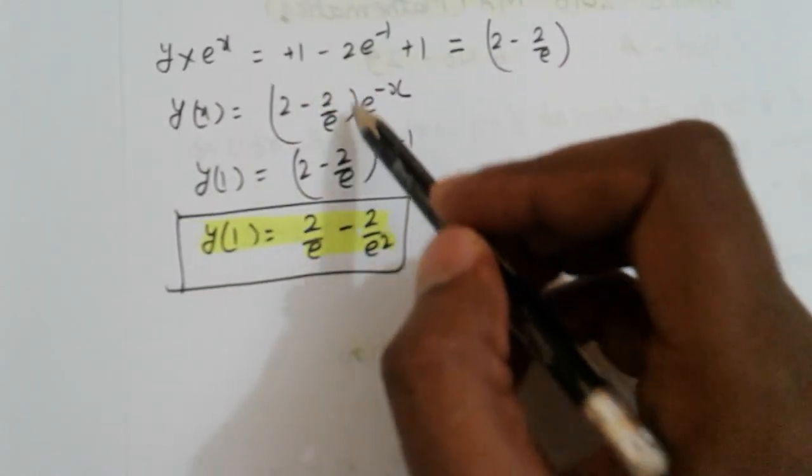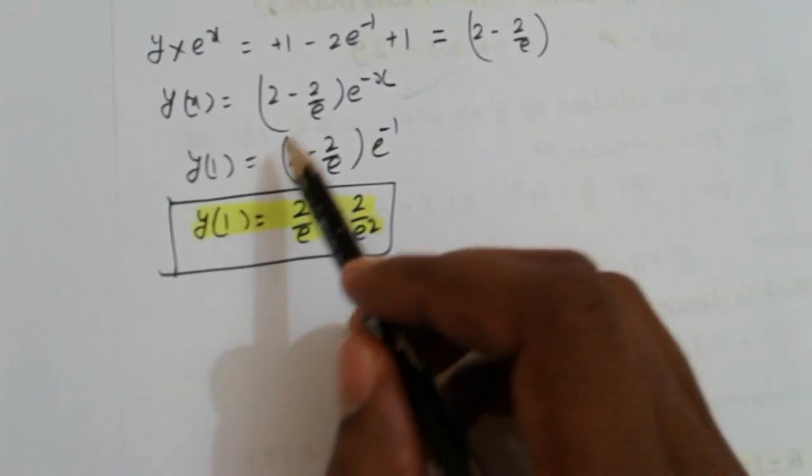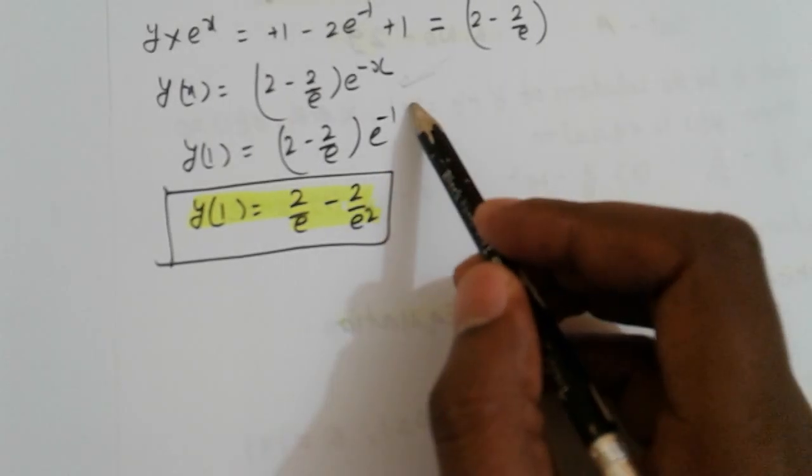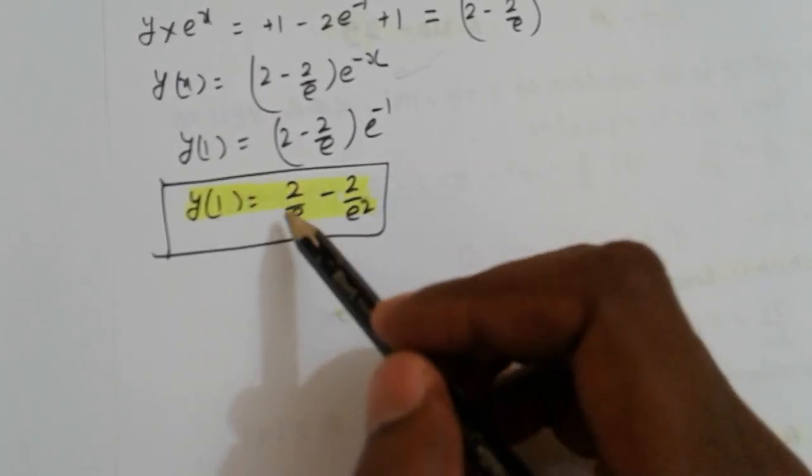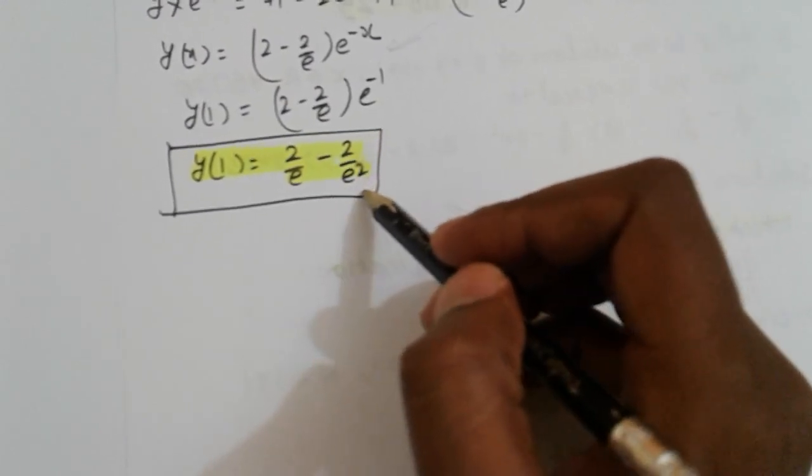So Y times e raised to x equals 2 minus 2 upon e. Multiply by e raised to minus x, so Y(1) equals 2 upon e minus 2 upon e squared.